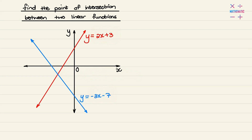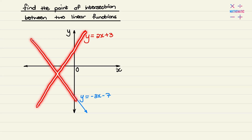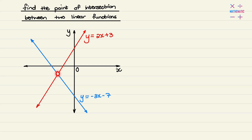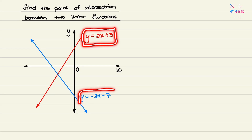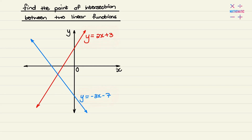Now it is tempting to draw these lines out very accurately and read that coordinate from the graph, but we want to find it algebraically — meaning with calculations — so what we'll do is we'll set these two equations equal to one another.